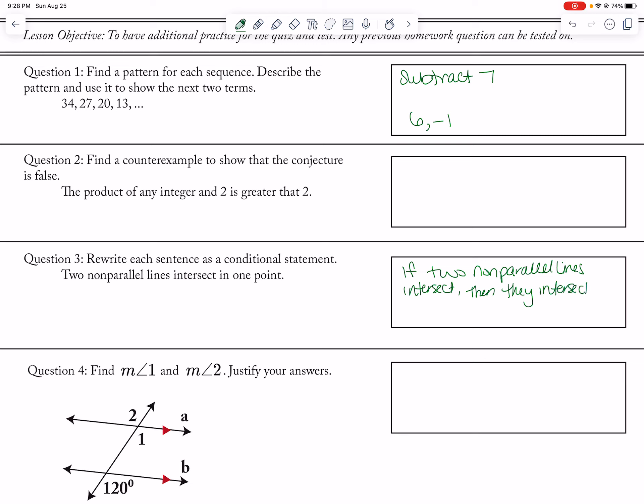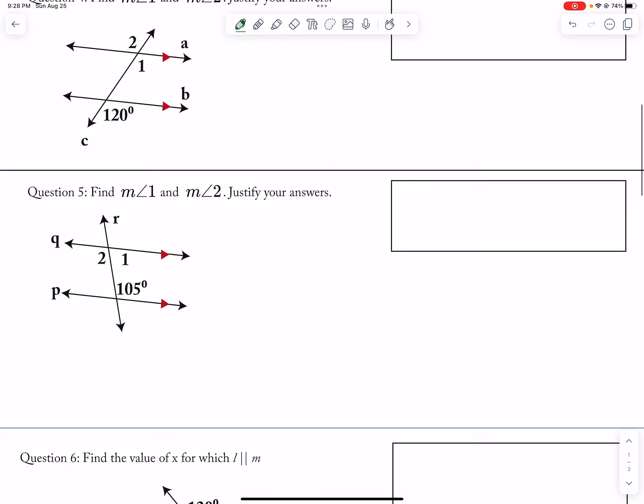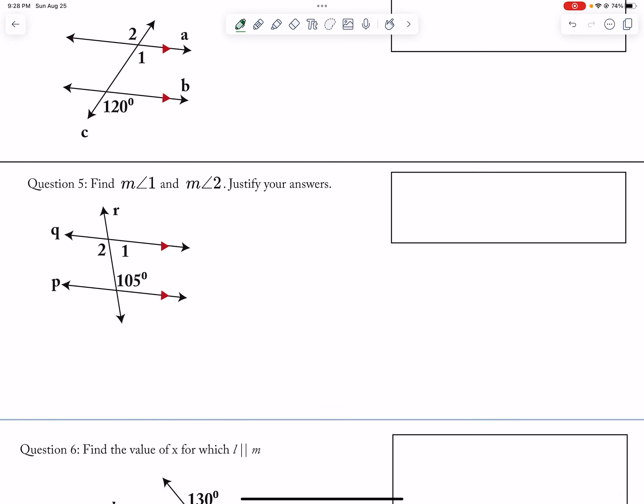Okay, now let's see. Measure of angle 1, so same side interior angles, so that would be 75. And then measure of angle 2 would be 105, and that's alternate interior angle.